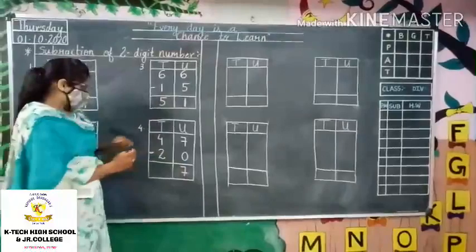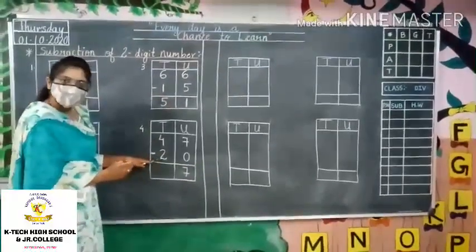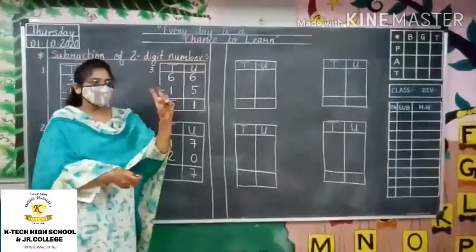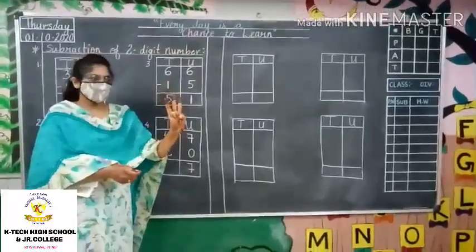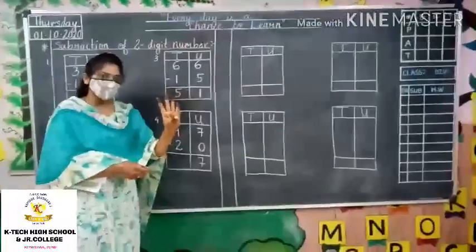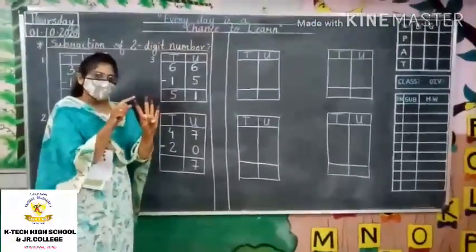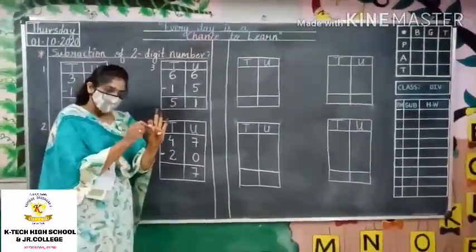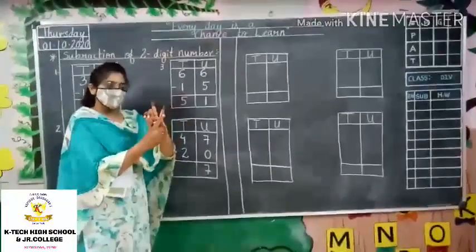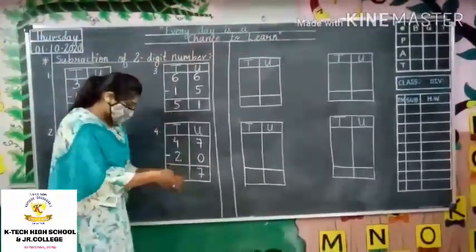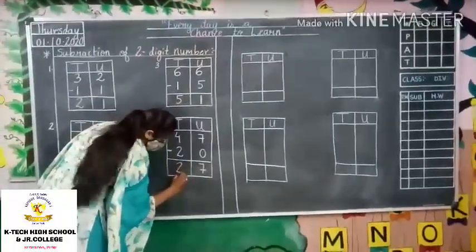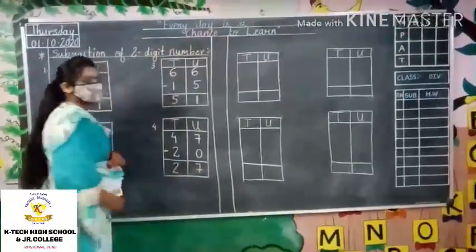Next, tens part: 4 minus 2. Put up 4 fingers — 1, 2, 3 and 4. Remove 2 fingers — 1 and 2. How many fingers are remaining? 1 and 2. So the answer is 2. That is 27.